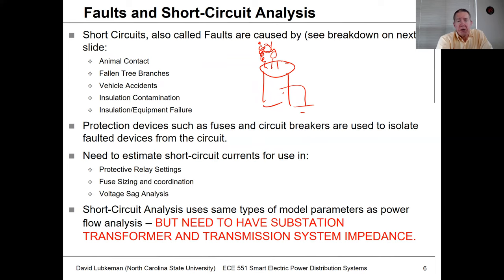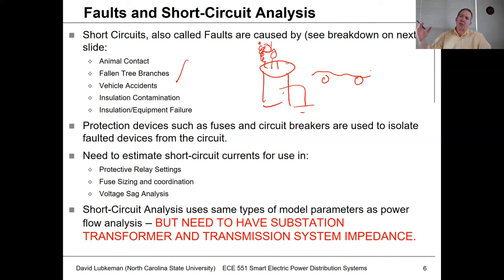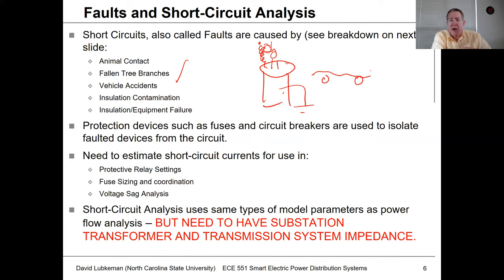Tree branches falling into lines are another cause. It's not so much a branch falling across two hot wires, but a tree actually pushing a phase into a neutral or pushing one phase into another phase, because tree branches have a fairly high impedance. Vehicle accidents are also a common cause — somebody running into a pole and knocking it over.